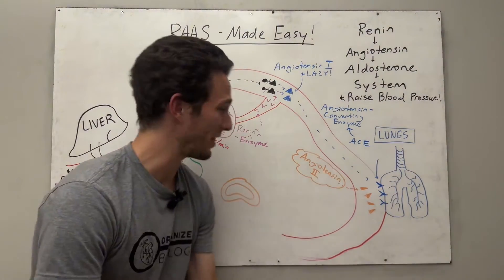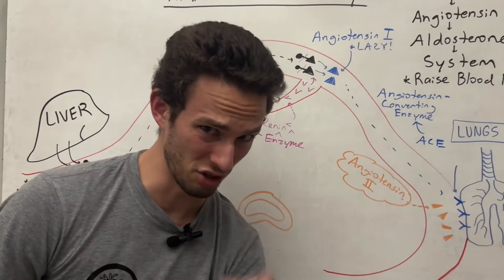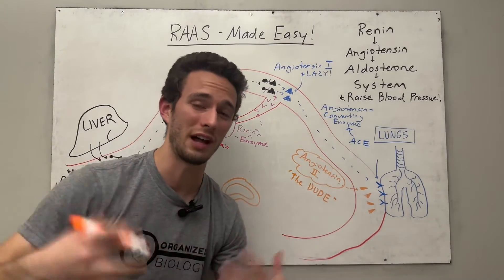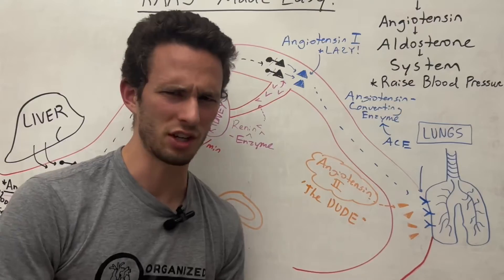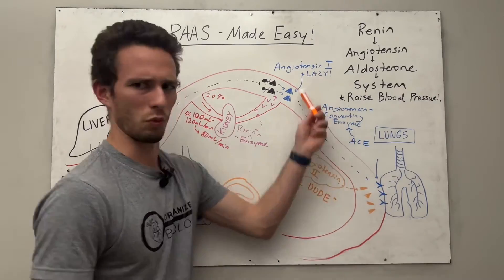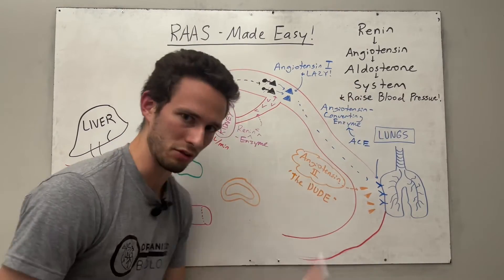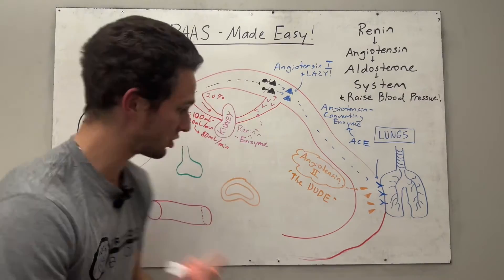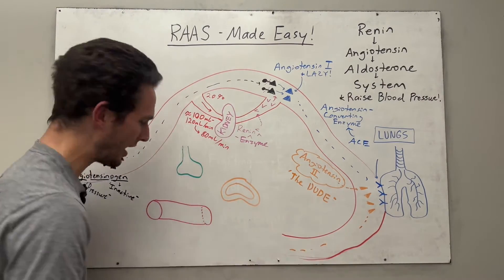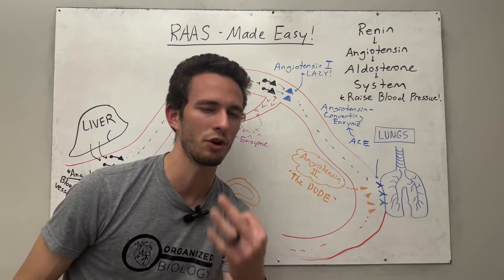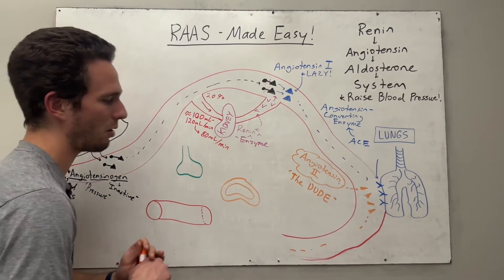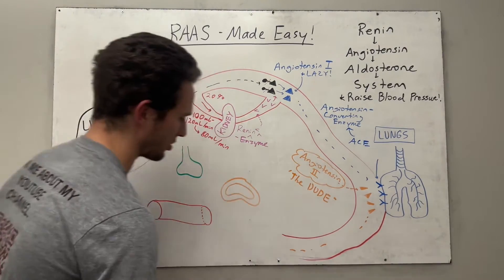Now I like to remember that angiotensin 2 is the dude — it's the one that's actually going to do a whole lot of work. Angiotensin 1 was lazy, but angiotensin 2 is going to do some work. It returns back to circulation and acts on three different organs. Remember, the goal is to raise blood pressure, so think about how these organs could increase blood pressure.